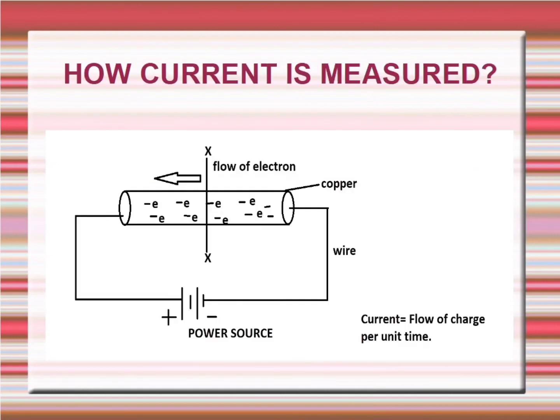Let us learn how current is measured. Let us take a copper rod and connect it to a potential difference across it. So the charge will start moving. Let us draw an imaginary axis XX and watch the amount of charge flow through the XX axis. Amount of electric charge flow per unit time through the copper rod is the amount of current. So current is measured as amount of charge flow per second.